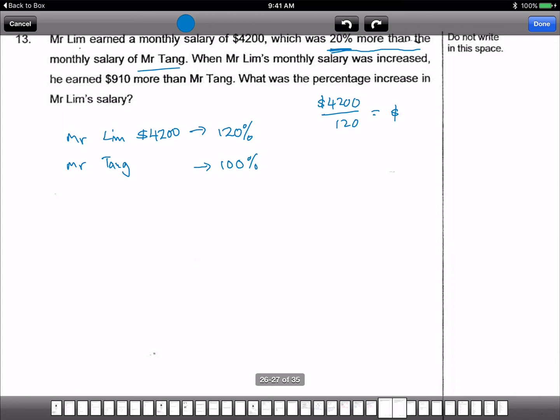$35 is equivalent to 1%, so 100% is $3,500. Okay, so Mr. Tang earns $3,500.